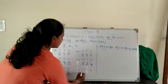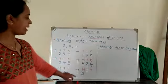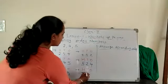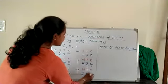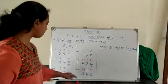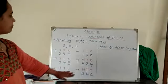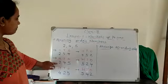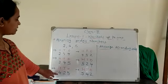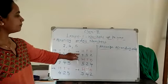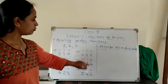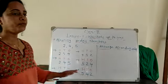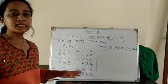Then again, in the 100s place take 5, and interchange 2 and 4 in the 10s and 1s places. So 4 is in the 10s place and 2 is in the 1s place. Now look here — there are 6 different numbers: 254, 245, 425, 452, 524, and 542.